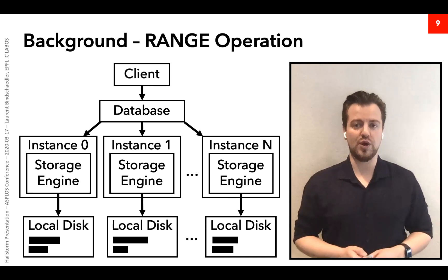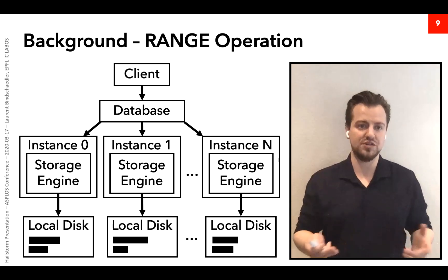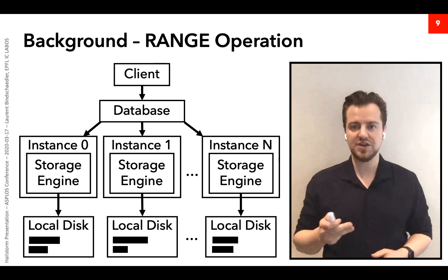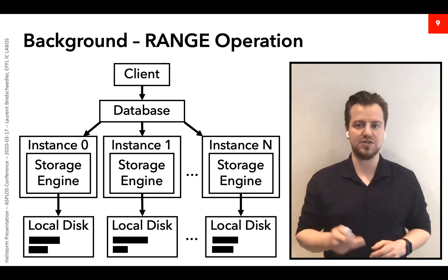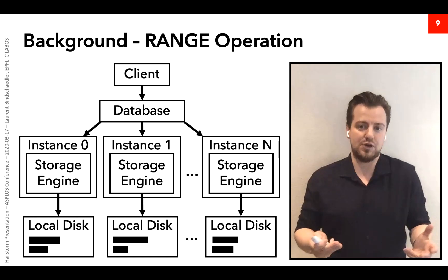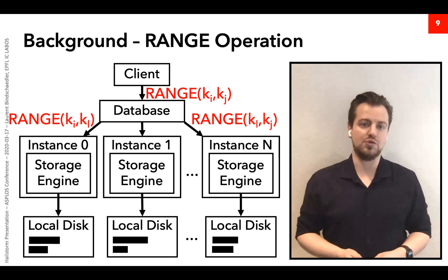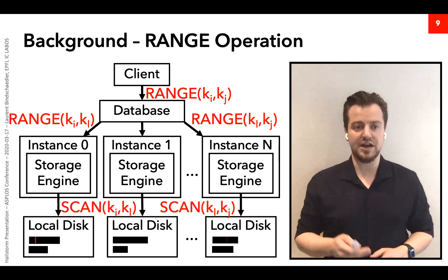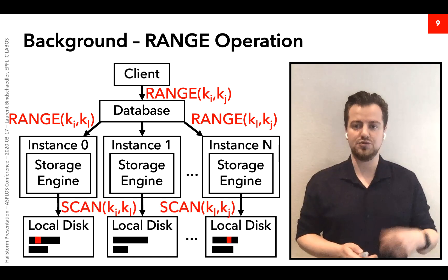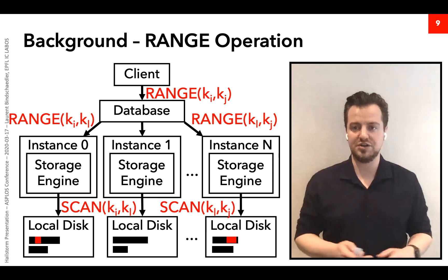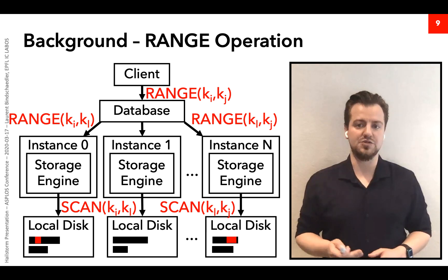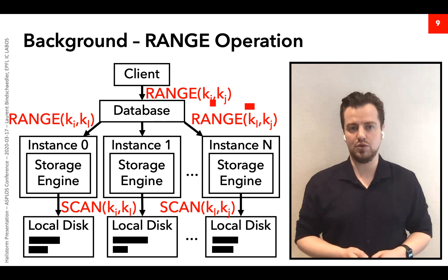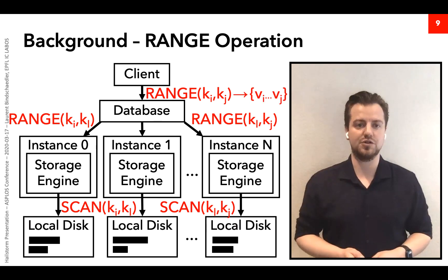The third operation is a range read, in which the client wants to read a range of keys and their associated values. The database forwards the request to each instance that stores part of the key range — here, instance zero and instance n. Each instance uses its storage engine to read the data from disk, which may take different amounts of time. When done, they send the values back and the database assembles the final results returned to the client.